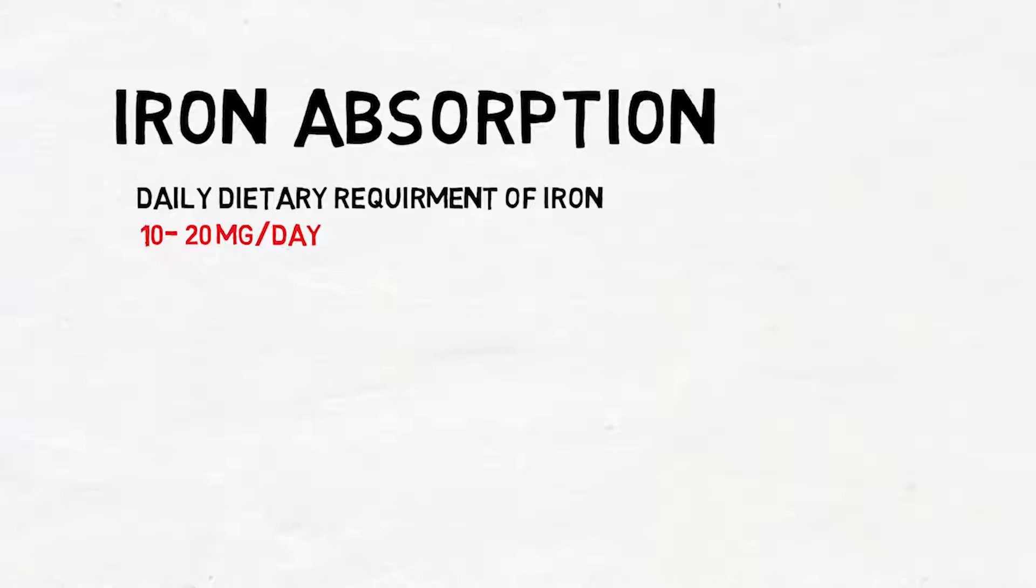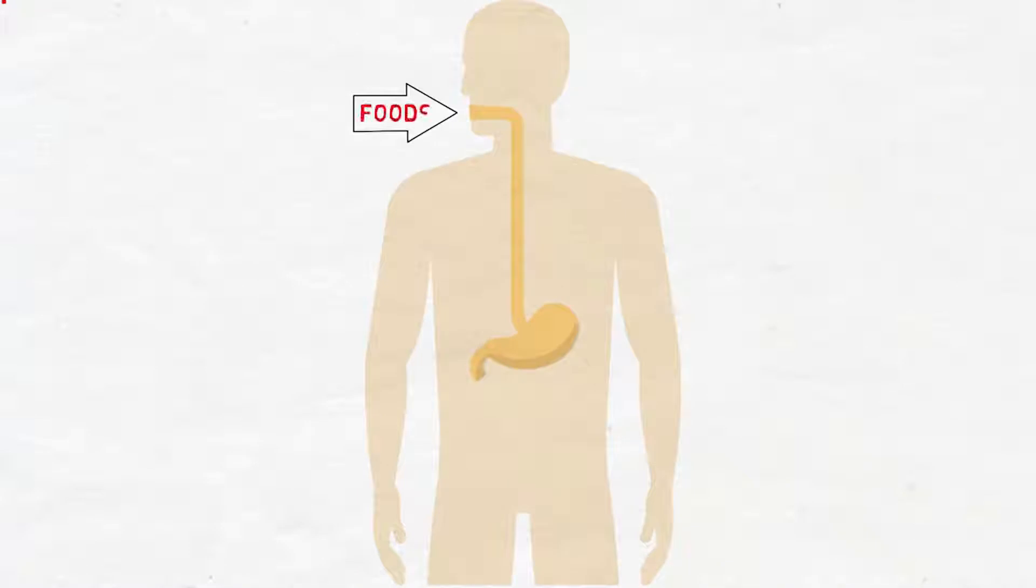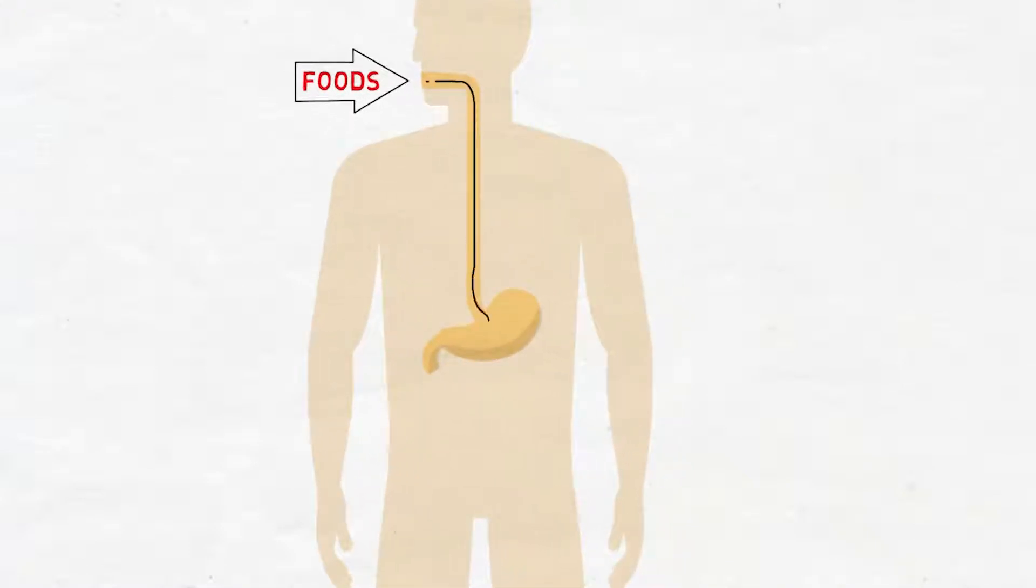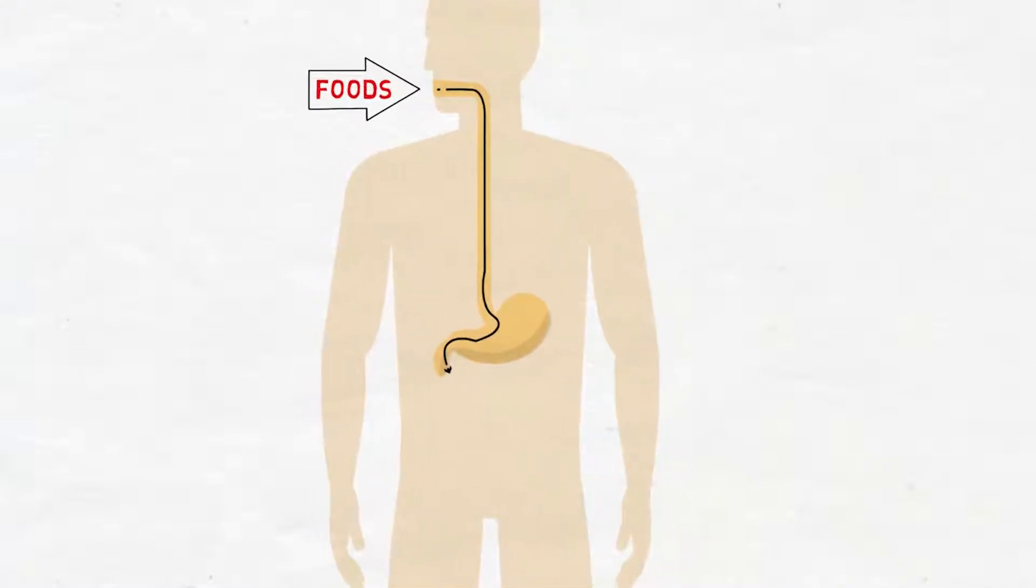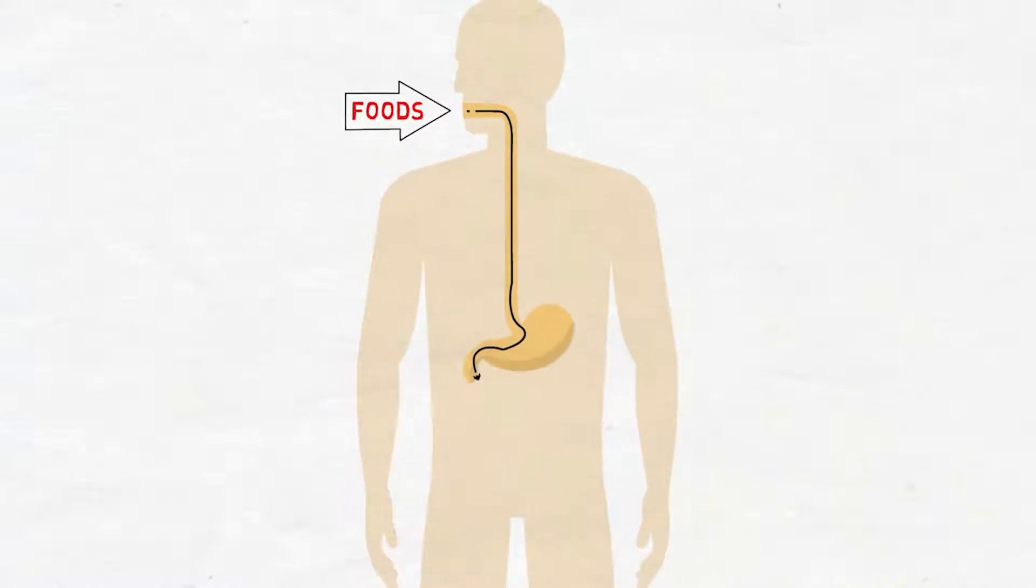It changes according to age and sex. So first we take iron by eating foods, then it travels in the alimentary tract and when it arrives in the small intestine it gets absorbed into enterocytes.